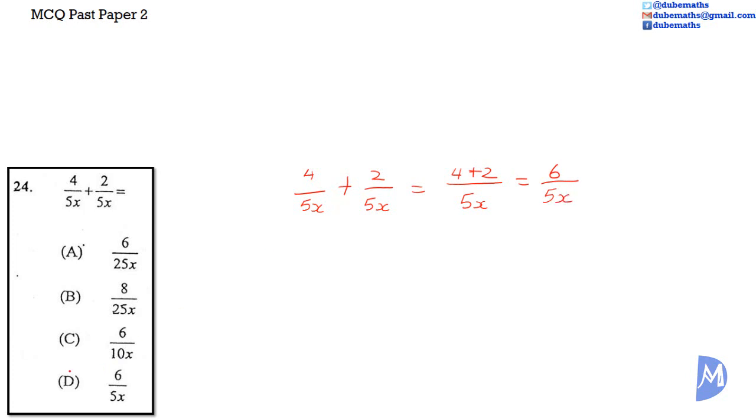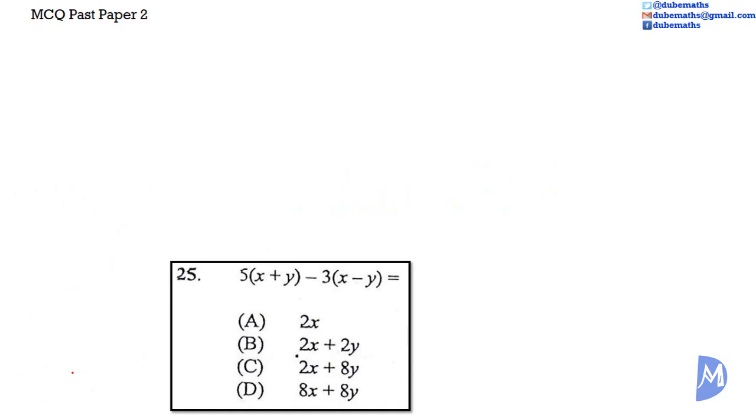The answer is D. Question 25: 5 multiplied by x plus y subtract 3 multiplied by x minus y. Is it equal to A, 2x; is it equal to B, 2x plus 2y; is it equal to C, 2x plus 8y; or is it equal to D, 8x plus 8y?